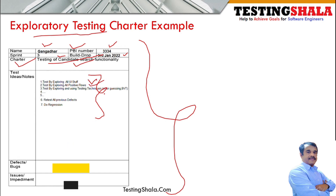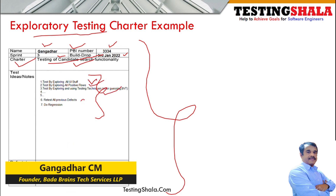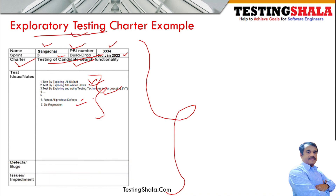We will be testing all the previous defects and will do certain regression as part of this exploratory testing. Any issues identified will be logged as defects or bugs, and we'll also be logging issues or impediments encountered while performing this exploratory testing. This is how the exploratory testing charter would look like.